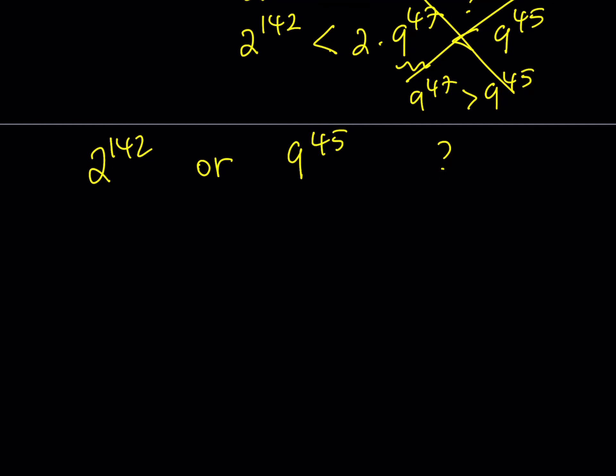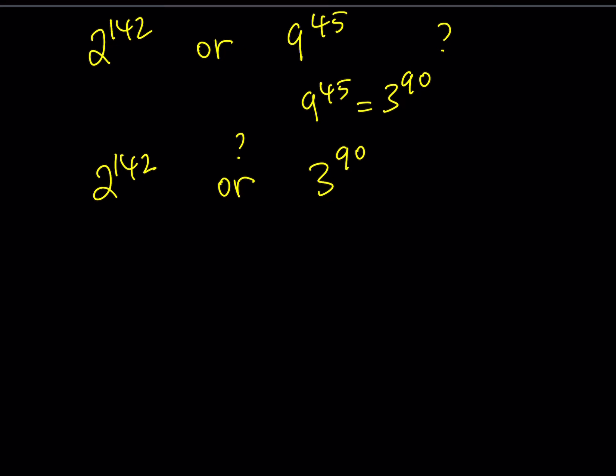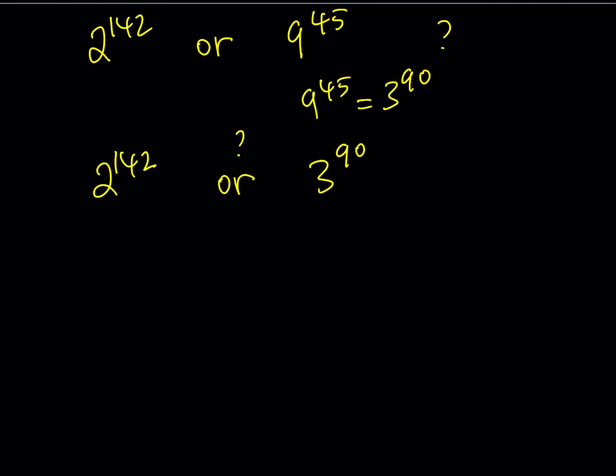Now, another way to approach this problem is a little different than what we did here. So let's rewrite our numbers. Is it 2 to the power of 142 or 9 to the power of 45? Which one is greater? I want to turn this 9 to the 45 to a power of 3. So let's write this as 3 to the power of 90.